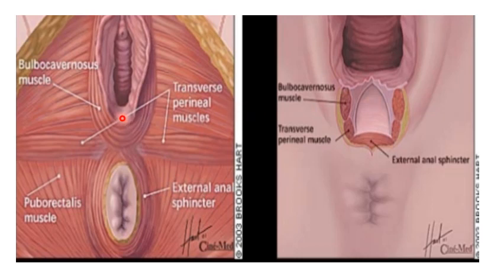But in the mediolateral episiotomy, you cut the vaginal mucosa, the fourchette, the muscle — which is the bulbocavernosus muscle and the superficial and deep transverse perineal muscle — and it may extend to the puborectalis part of the levator ani, along with the perineal skin and fascia.